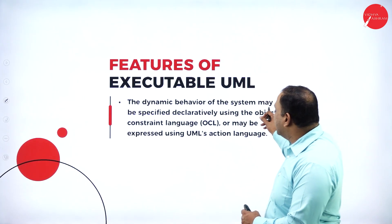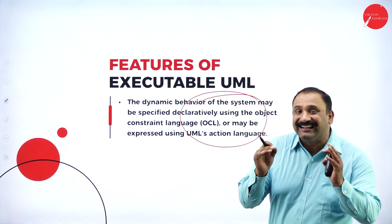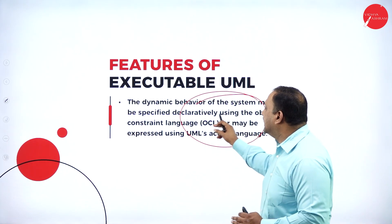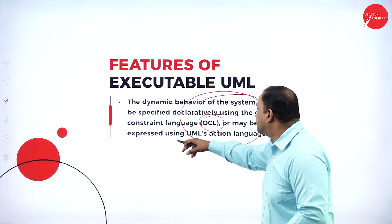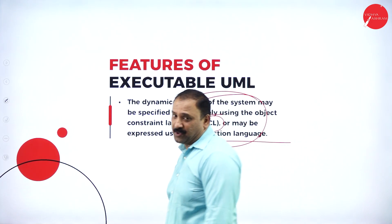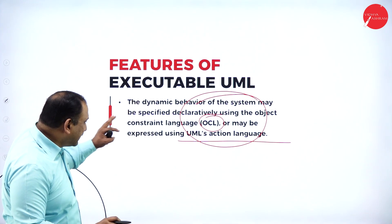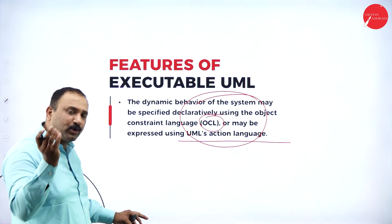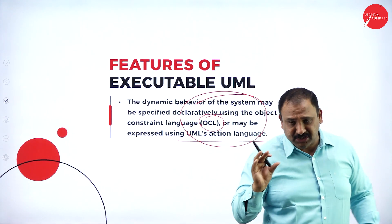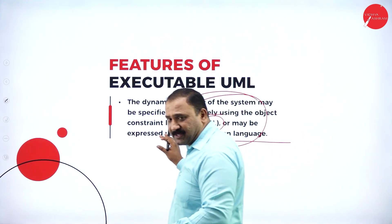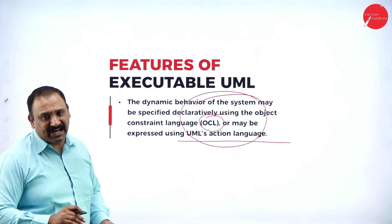The third feature is that the dynamic behavior of the system may be specified declaratively. This is expressed as an objective constraint in terms of the language factor, using UML's action language. Even if there are constraints that might not work with the project delivery, it can still be expressed and taken forward through the UML action language.